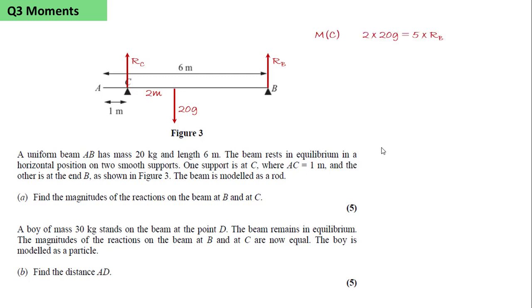First, we take moments about C. That means the reaction RC will have no moment at that point. And we get 2 times 20g, the clockwise moment, equals 5 times RB, the anticlockwise moment. And so RB equals 8g.